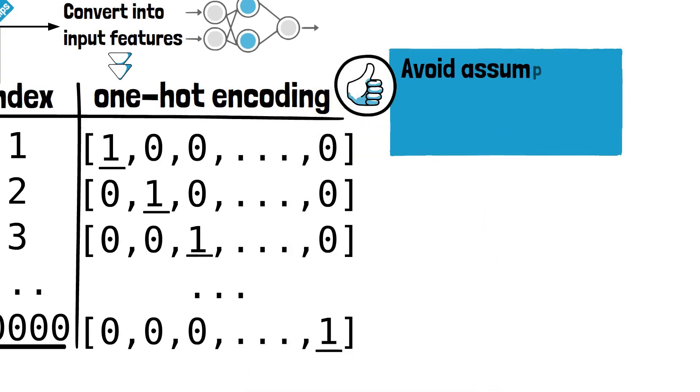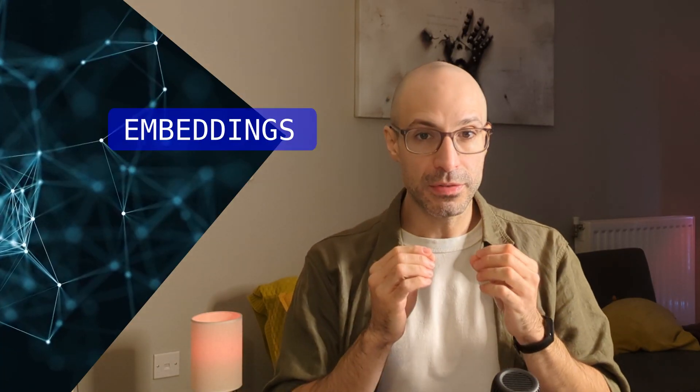The advantage of one-hot encoding is that it avoids assumptions about the relative importance of words and allows the model to learn the relationship between words during training. The issue with one-hot encoding is that it doesn't scale well to very large vocabularies. Take the English vocabulary: we have over a hundred thousand words, which means that to represent a single word we would need a vector with a hundred thousand elements. And now think of a very long sequence, and that would take a lot of space and a lot of computational power.